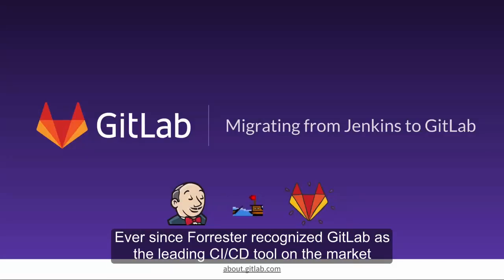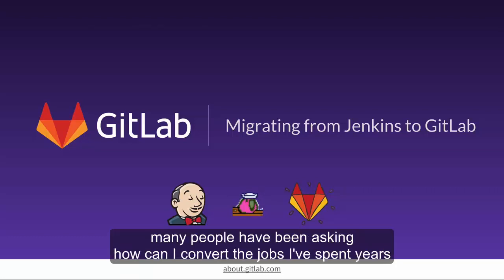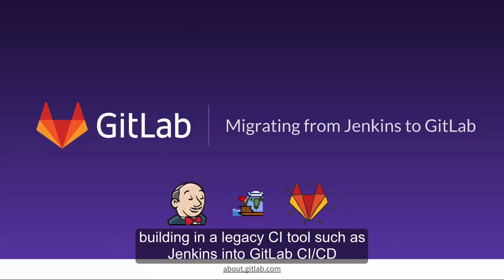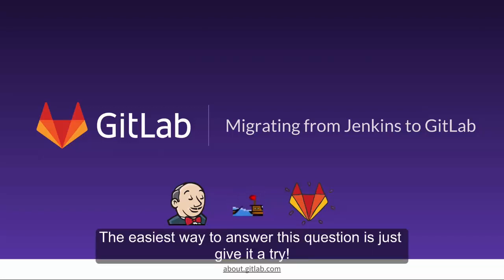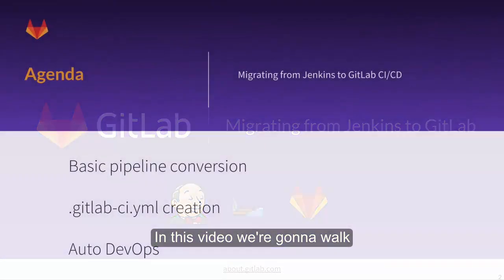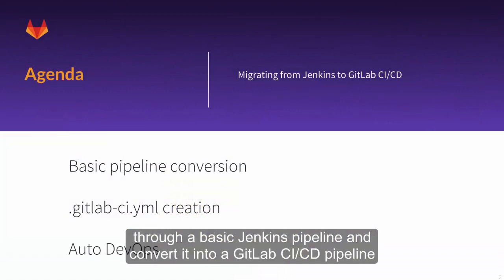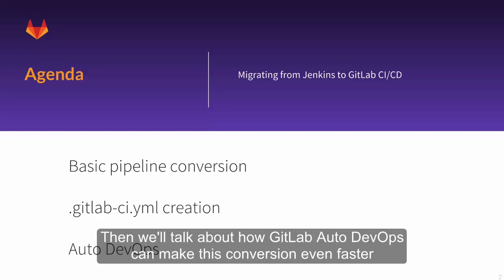Ever since Forrester recognized GitLab as the leading CI/CD tool on the market, many people have been asking how they can convert the jobs they've spent years building in a legacy CI tool, such as Jenkins, into GitLab CI/CD. The easiest way to answer this question is just give it a try. In this video, we're going to walk through a basic Jenkins pipeline and convert it into a GitLab CI/CD pipeline, then talk about how GitLab Auto DevOps can make this conversion even faster.